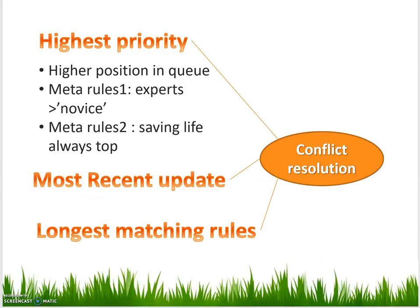There are a few strategies when listing rules from experts. First, higher position in the queue is read first — that is the priority. Second, meta-rules apply: rules from experts are more important than rules from novices. Third, another meta-rule: saving life is always the top priority — any rule that saves lives must be given priority.